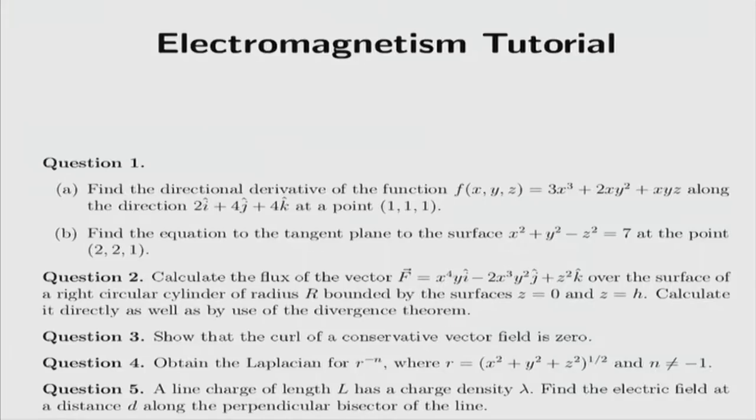The first problem we are going to tackle is question number 2: calculate the flux of the vector over the surface of a right circular cylinder of radius r bounded by z equals 0 and z equals h. Calculate it directly as well as by use of the divergence theorem. This problem is actually quite simple. The basic idea is that when you calculate it directly and using the divergence theorem the answer should match, especially since you don't have any singularities.